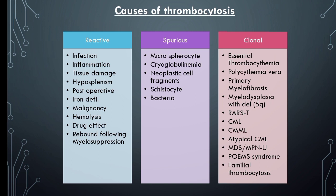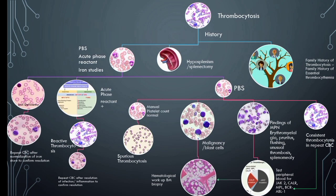Thrombocytosis has multiple etiologies, and evaluation of a patient with thrombocytosis requires careful consideration of clinical history, comorbid conditions, other hematological parameters, and past platelet count. First, ask for splenectomy history and family history of thrombocytosis. Second, iron deficiency anemia is a common cause of reactive thrombocytosis, so first rule out iron deficiency anemia by doing iron studies.